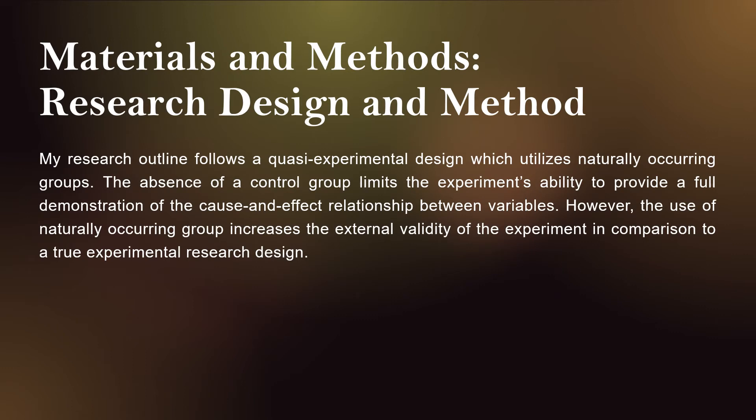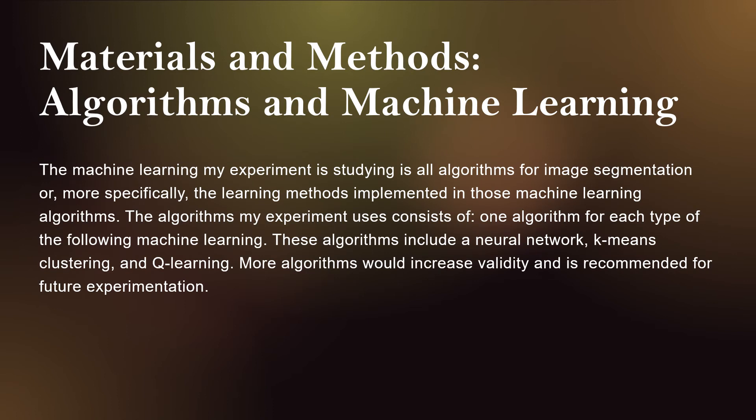My research is set up as a quasi-experiment. It's different from a true experiment in that it uses naturally occurring groups instead of random assignment. These naturally occurring groups are the algorithms that fall under the three learning styles I am studying. My experiment is a study on all machine learning segmentation algorithms, which will be represented by three specific algorithms, one for each type of machine learning.